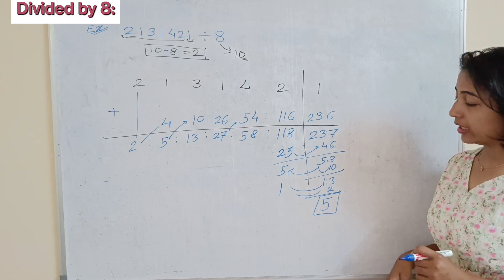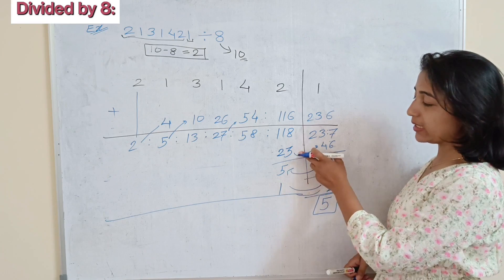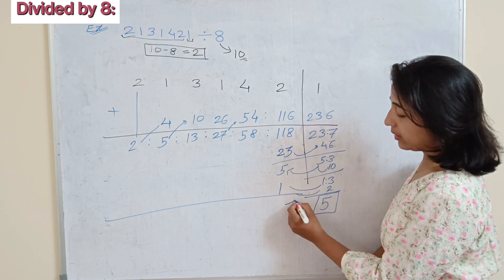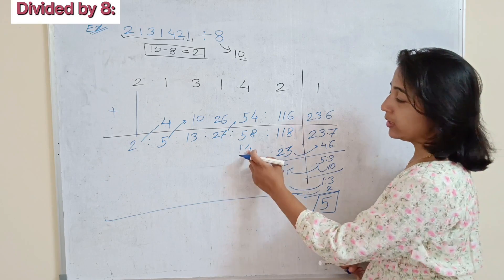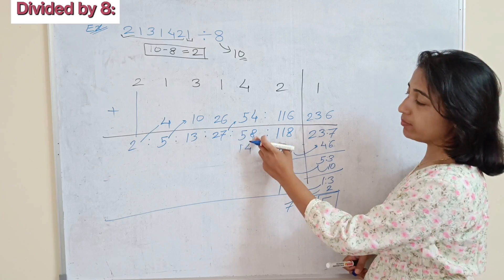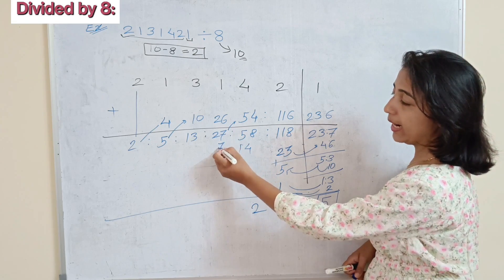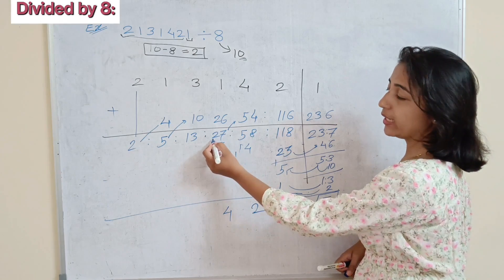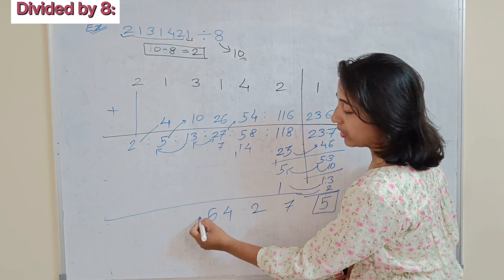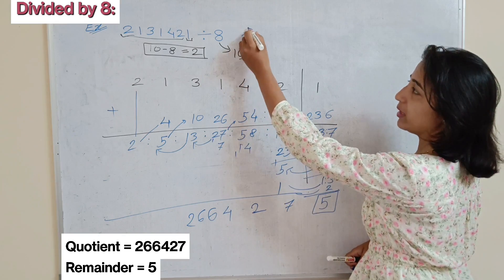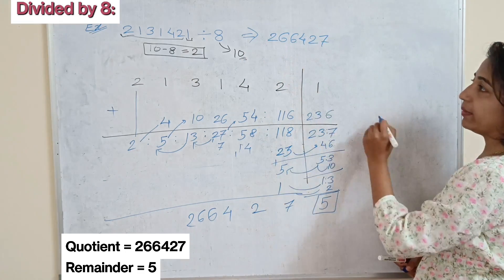Now taking the sum of all the digits: 5 plus 1 is 6, plus 3 is 9, plus 8 carries 1 making it 14; 14 carries 1 forward. 4 plus 8 is 12, carry 1; 7 plus 7 is 14, carry 1 making 3; 3 plus 1 is 6. Then 5 plus 1 is 6, next is 2. So when we divide 2131421 by 8, the quotient is 266427 and the remainder is 5.